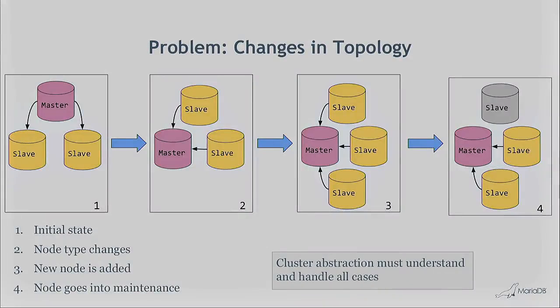Changes in topology are another challenge. Consider a master with two slaves: the master might drop or be switched, a new node might be added, or a node might be put into maintenance. The abstraction layer needs to know about all of this. This applies to multi-master clusters where you can write to any node, and it's especially a big problem for master-slave topologies.